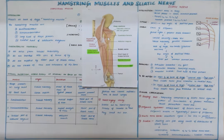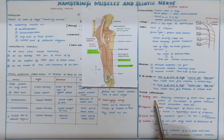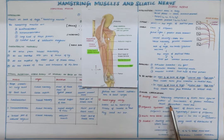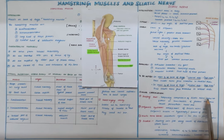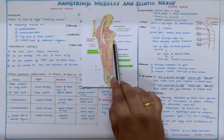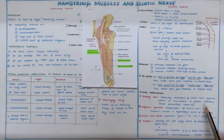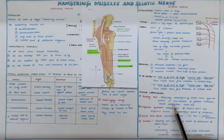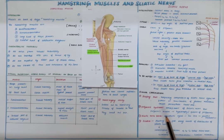Coming to the clinical correlations, the first is the sleeping foot syndrome. This is basically a temporary compression of the sciatic nerve against the femur at the lower border of the gluteus maximus, causing paresthesia of the lower limb.